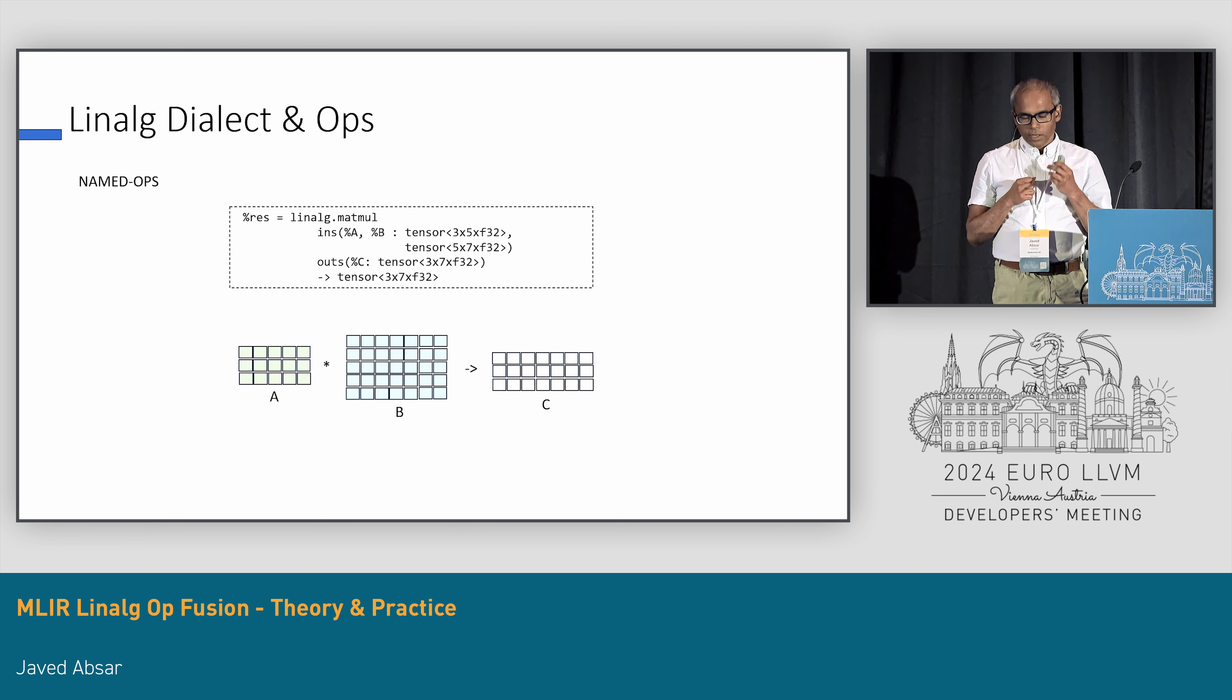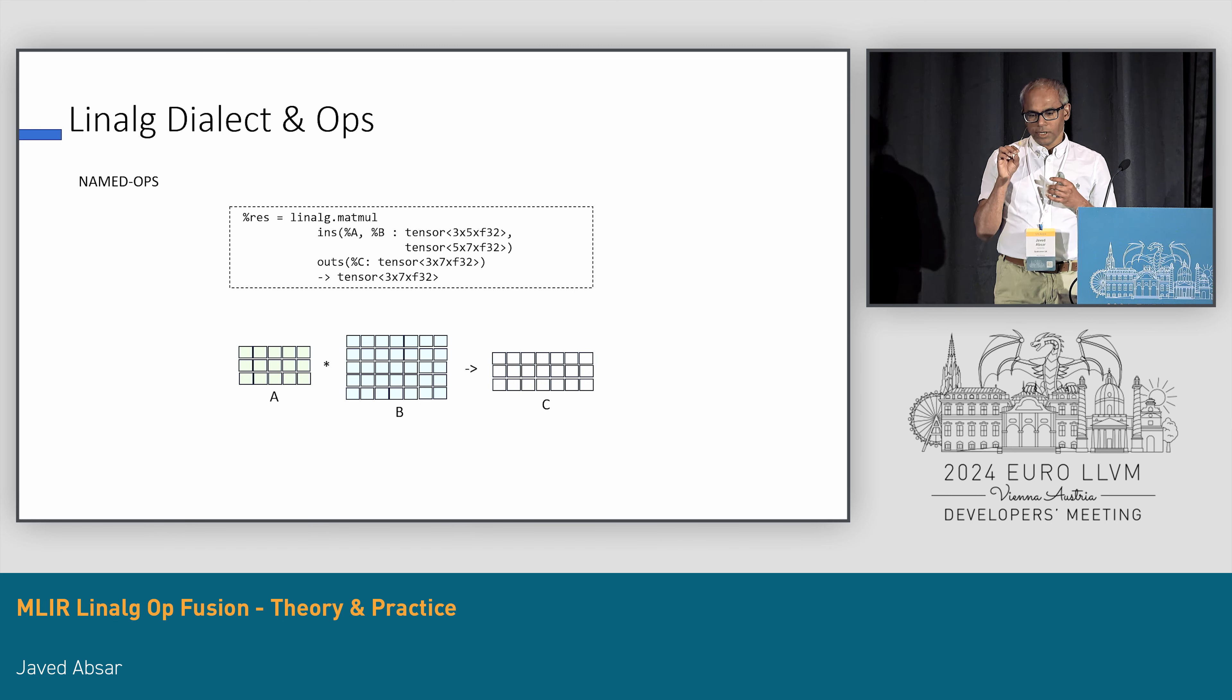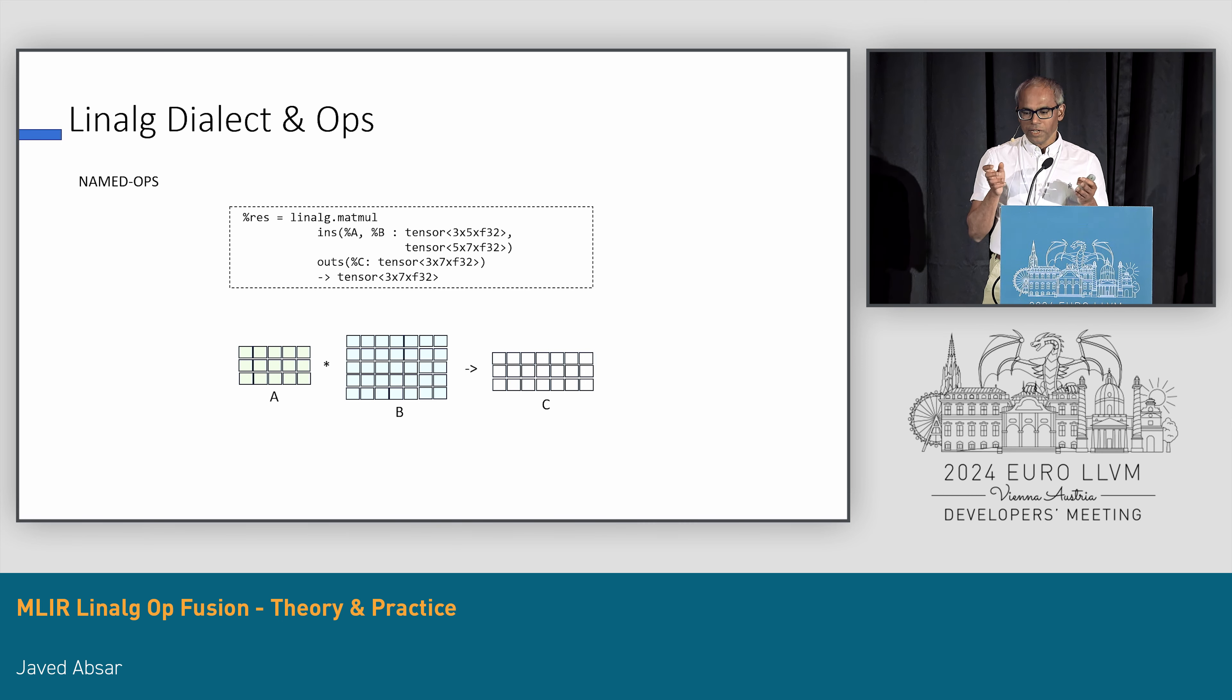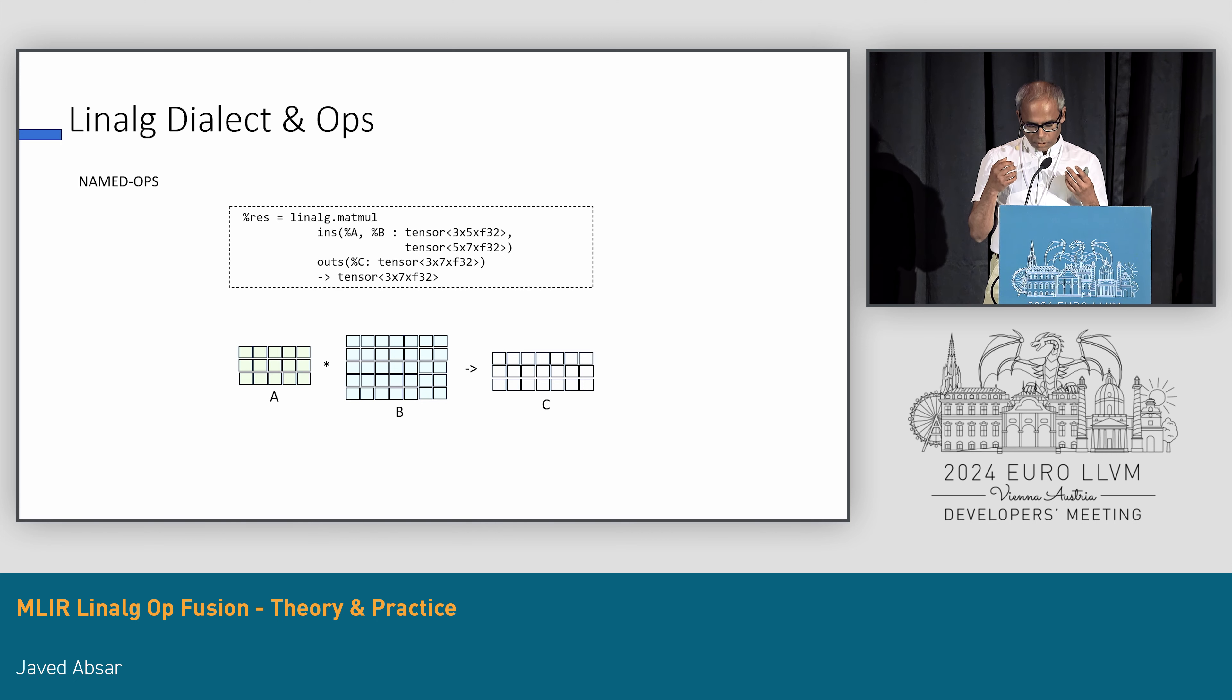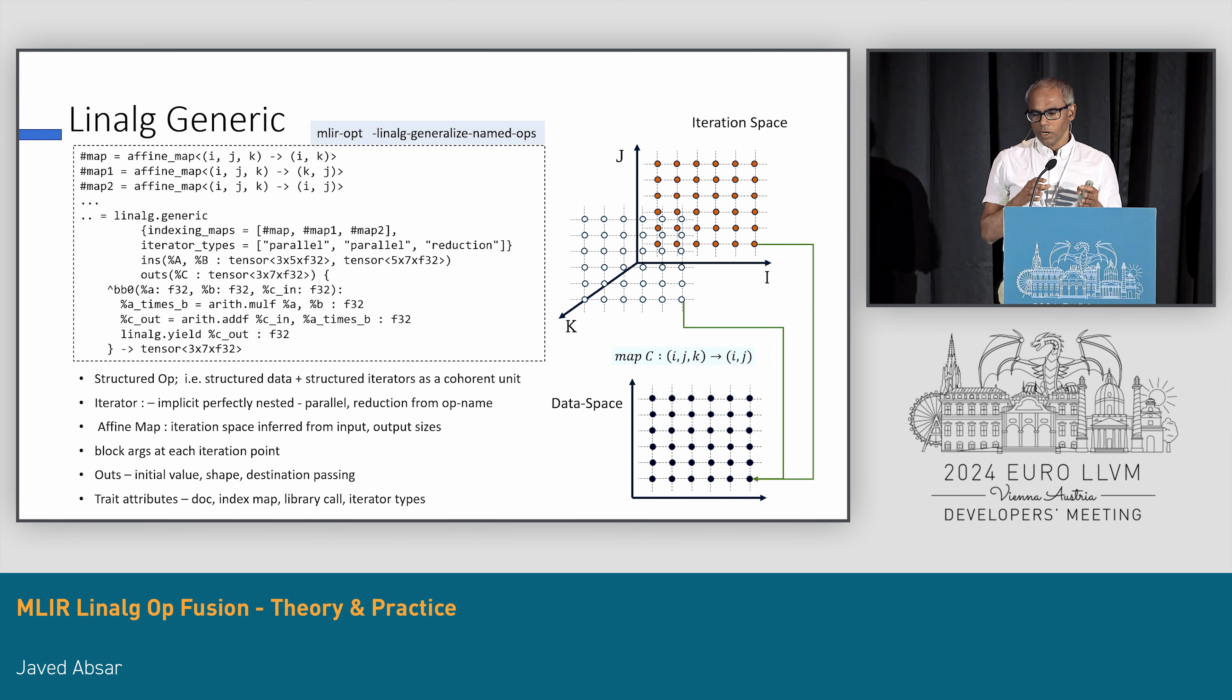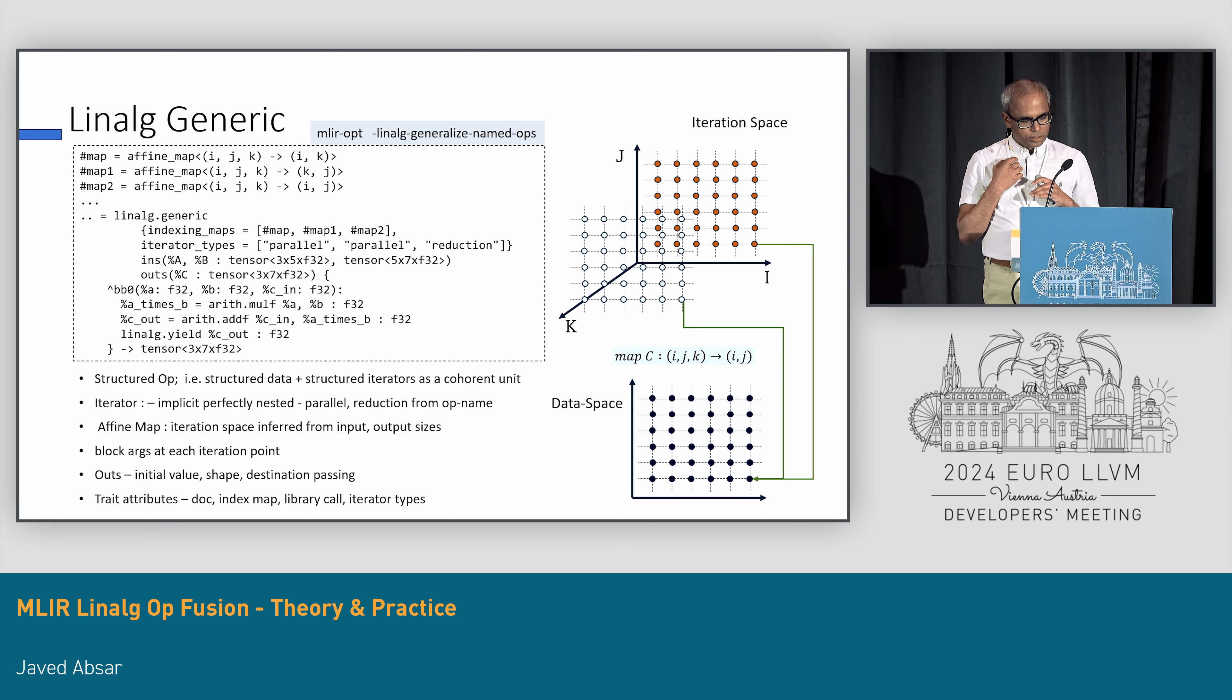Linalg ops. Machine learning is a lot about matrix multiplication, so let's have a look at linalg.matmul. It's a named op. A named op means the semantics is carried by the name itself. You could have a lot of named ops, and they will have their semantics. That's not really a good thing, because what happens when you try to do lowering or transformation? What is a common abstraction? Linalg solves this problem by having this requirement that all named ops really are under the hood linalg.generic.